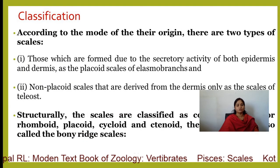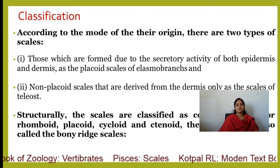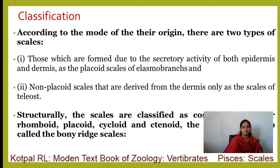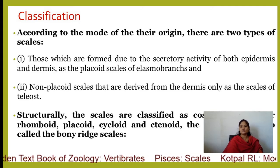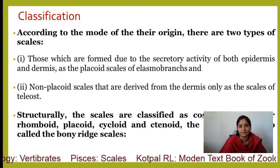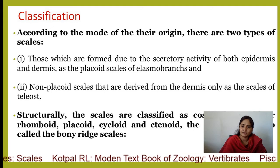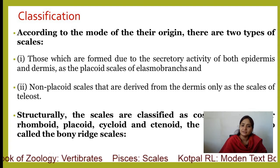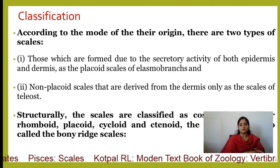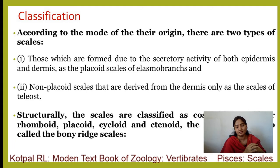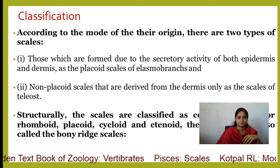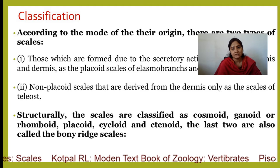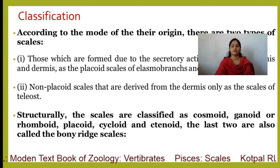If we look at the classification, there are two types. Those which are formed due to the secretory activity of both epidermis and dermis are Placoid Scales, characteristic of elasmobranchs or cartilaginous fishes. Non-placoid scales are derived only from the dermis, as in the scales of teleosts — modern fishes derived only from the dermis.